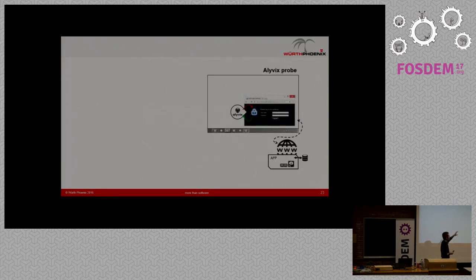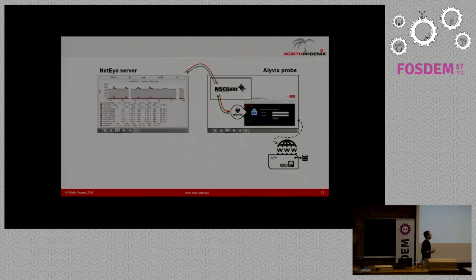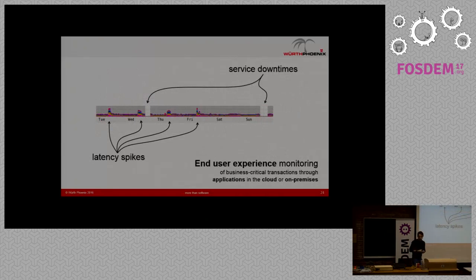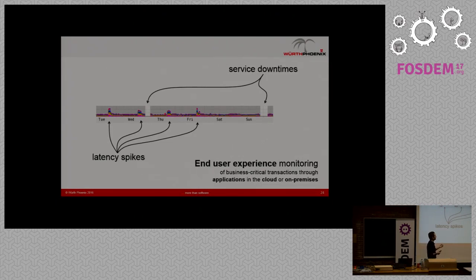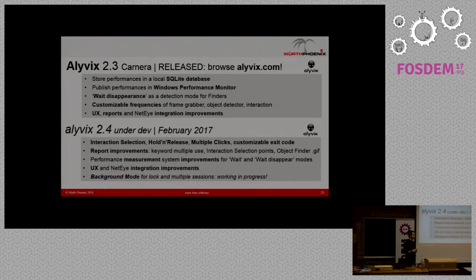Alivix can report everything to a monitoring system. You have your Alivix probe, and test cases can be automatically scheduled with a remote client like an SNMP client. It reports to your monitoring system, producing a final time series that makes it really clear when your network application suffered service downtimes and latency spikes.